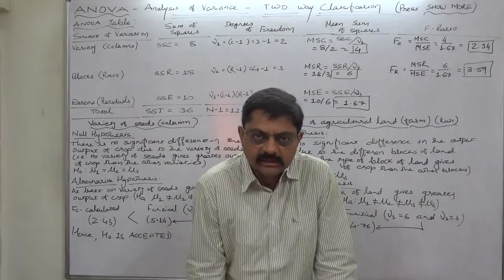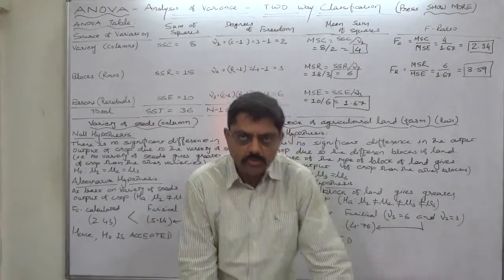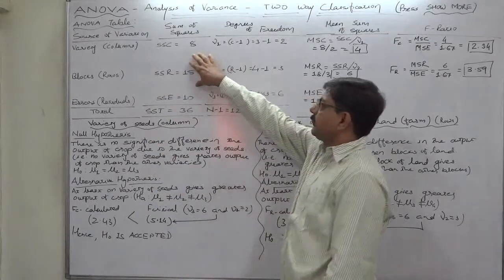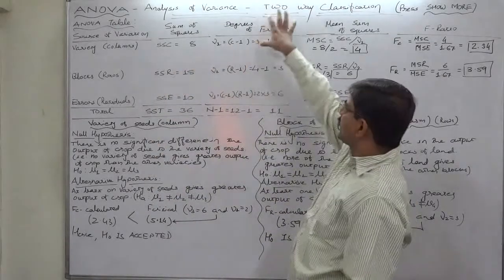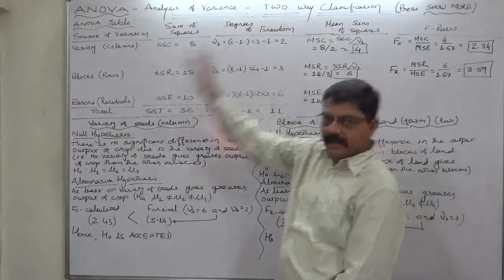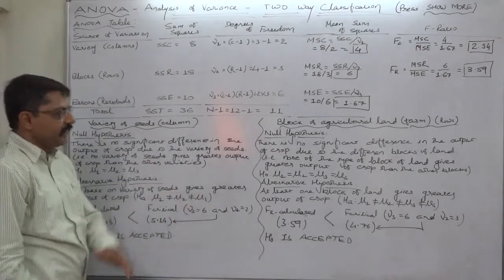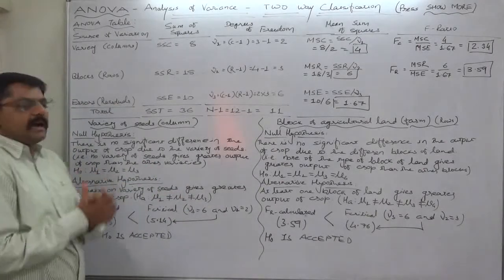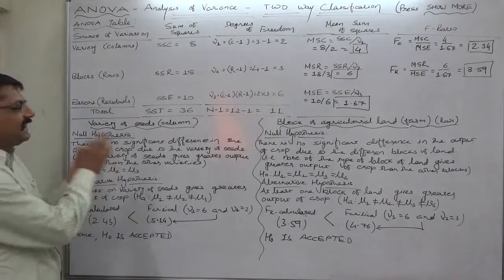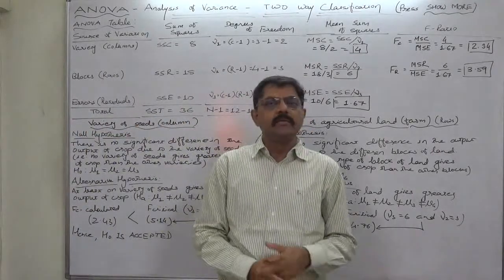This is our broad conclusion for this particular problem or case. I hope this lecture proved to be useful to you for understanding the preparation of the ANOVA table for two-way classification and calculating the F-ratio as well as the procedure of testing of hypothesis. I always emphasize discussing the null and alternative hypothesis in each and every problem.